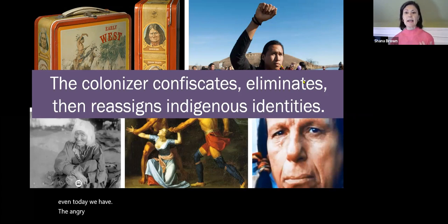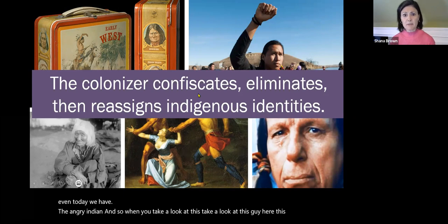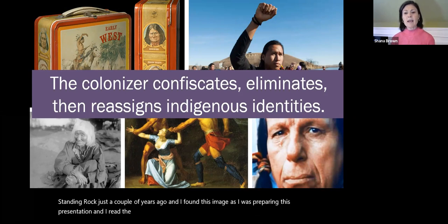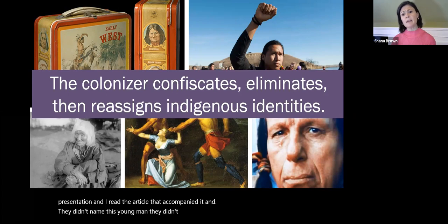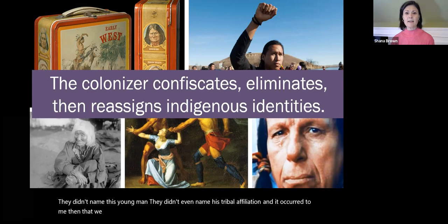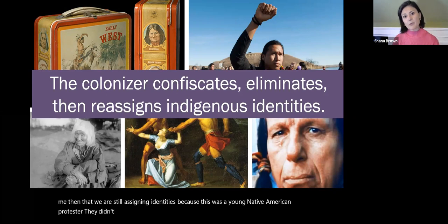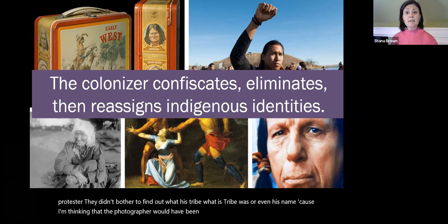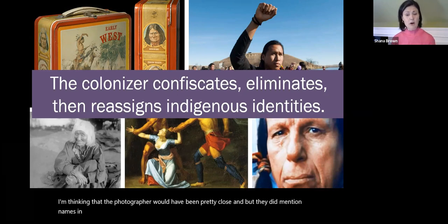When you look at this image from Standing Rock just a couple of years ago — I found it while preparing this presentation and read the accompanying article. They didn't name this young man; they didn't even name his tribal affiliation. We are still assigning identities. This was a young Native American protester and they didn't bother to find out his tribe or his name, even though the photographer would have been pretty close. But they did mention the names of all the white politicians and actors who were coming to his rescue.